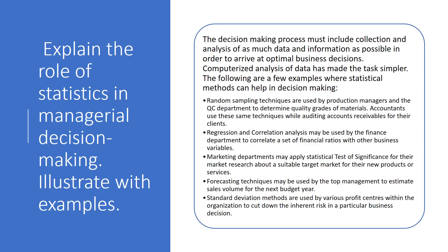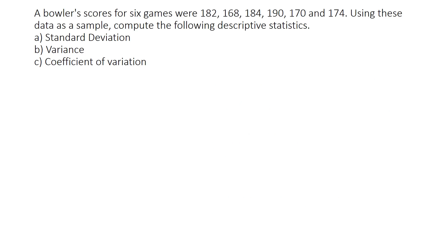The first unit question: explain the role of statistics in managerial decision making with an example. The decision-making process must include collection and analysis of as much data and information as possible to arrive at optimal business decisions. Random sampling techniques are used by production managers at QC departments to determine quality grade of materials. Accountants use the same technique while auditing. Regression and correlation analysis is used in the finance department, the marketing department applies statistical tests for significance in marketing research, forecasting techniques are employed by top-level management to estimate sales volume, and standard deviation methods are used by profit centers to cut down risk.